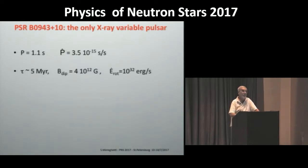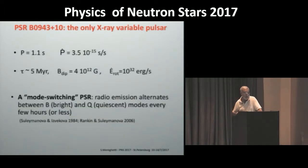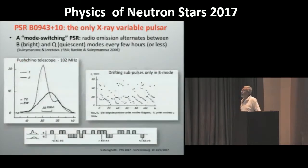What makes this object very interesting is that it is one of the so-called mode-switching pulsars. It alternates between two states, a so-called bright and the so-called quiescent state. This is the paper reporting the Pushkino telescope radio observation in which this bimodal behavior was discovered. These are the average pulse profiles. In the bright mode, it is brighter in radio. It is fainter in the so-called Q mode. And during the B mode, it shows a very regular pattern of drifting sub-pulses.